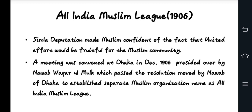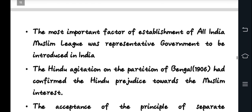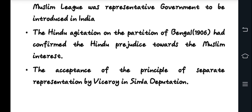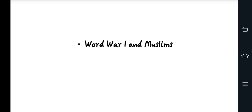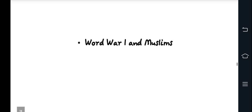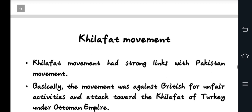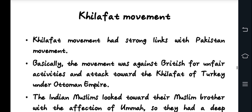Separate electorates were introduced by the British authorities, giving Muslims their own political entities through the concept of separate electorates. The Muslim League started the process of representation. Then came World War One and its impact on Muslims, including discussion of the Khilafat Movement.